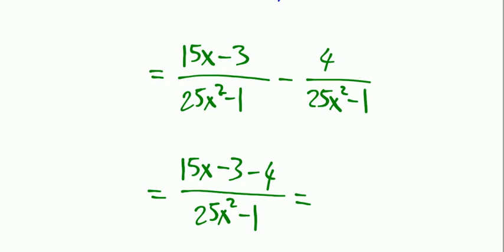The first numerator is 15x minus 3, the second numerator is minus 4. Let's organize and write the final answer: 15x minus 7 over 25x squared minus 1.